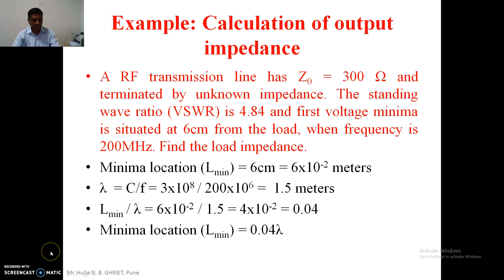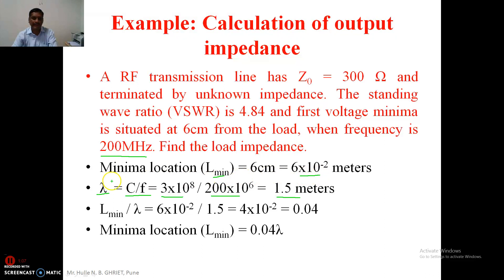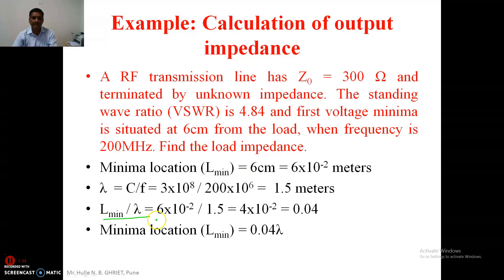The first task is to convert the given distance in terms of the wavelength. Lambda is given by the formula C divided by F, where C is the velocity of light, which is 3×10⁸ m/s. F is the frequency, given as 200 MHz, that is 2×10⁸ Hz, giving lambda equal to 1.5 meters. We take the ratio of L_minimum to lambda, which comes to 4×10⁻² — that is 0.04.